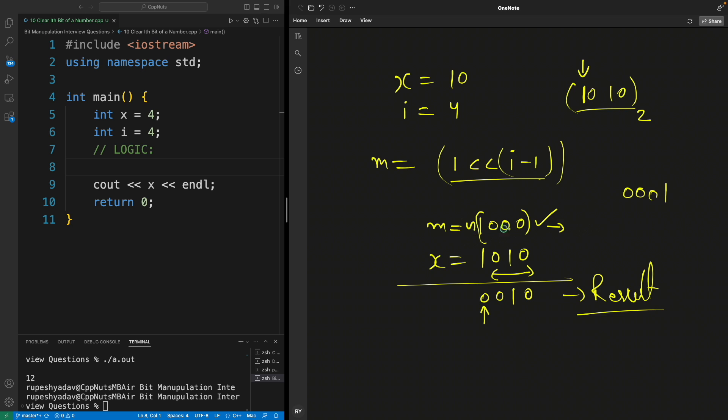you see if you do an AND operation - bitwise AND - in that case this is zero, this is one, this is zero, this is zero. See, this is exactly the result we want. So here the catch is to use this tilde or complement operator. Let me quickly show you that. So if we have mask m equals one left